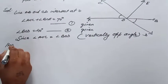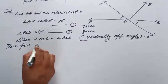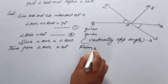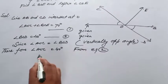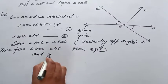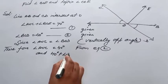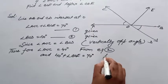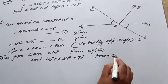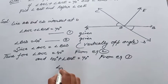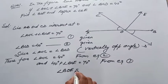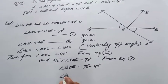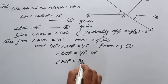Therefore, angle AOC is equal to 40 degrees from equation 2, and 40 plus angle BOE is equal to 70 degrees from equation first. Angle BOE is equal to 70 minus 40, angle BOE is equal to 30 degrees.